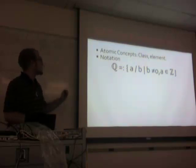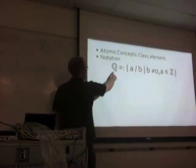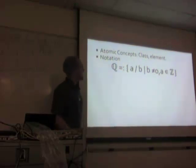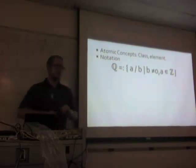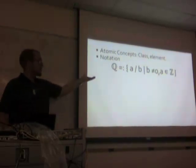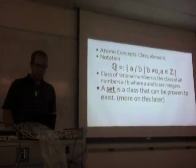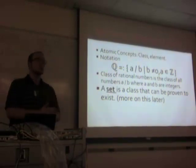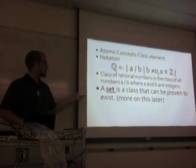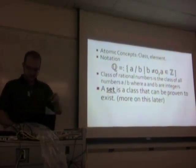Here is some notation. This is the symbol for the rational numbers, and we would read this as follows: the set containing all A divided by B, such that B is non-zero and B and A are both integers. This is how we define the rational numbers, and this is the notation we use in set theory. Now a set is what we're interested in — sets are the good things. We have this primitive concept of a class. A set is a class that can be proven to exist. Why do we have to define a set like this? Why can't we just say a set is a collection of elements?